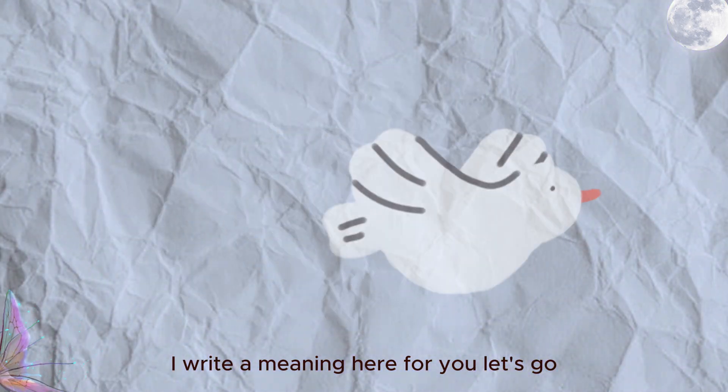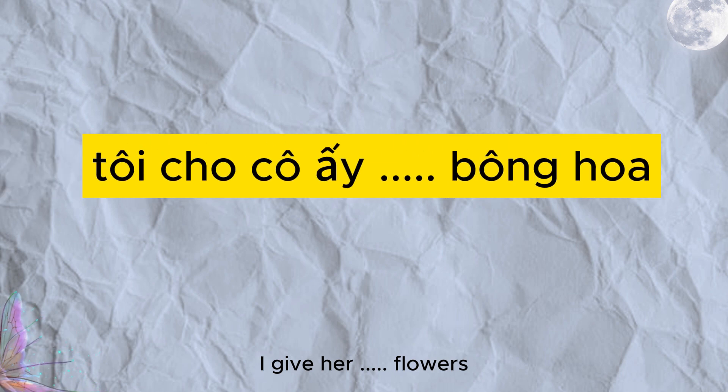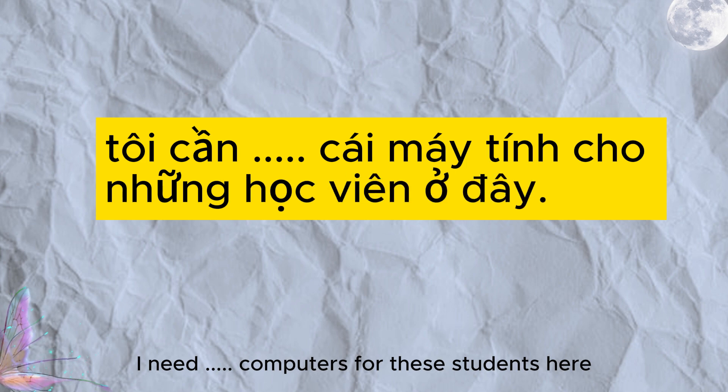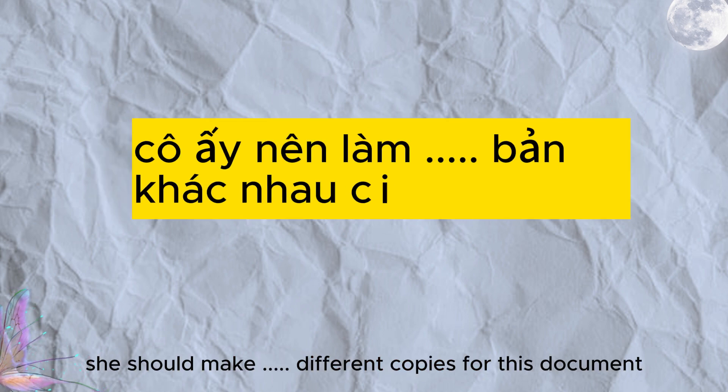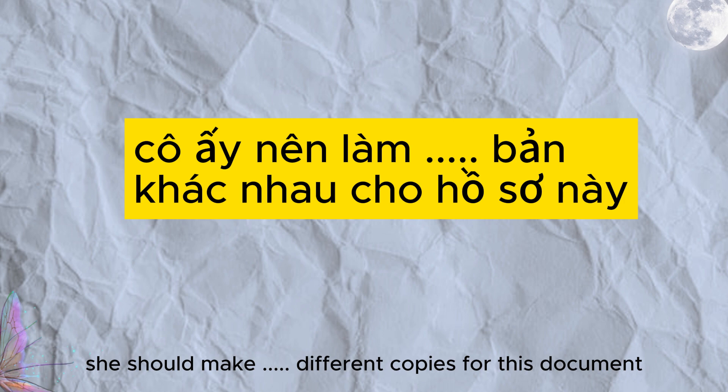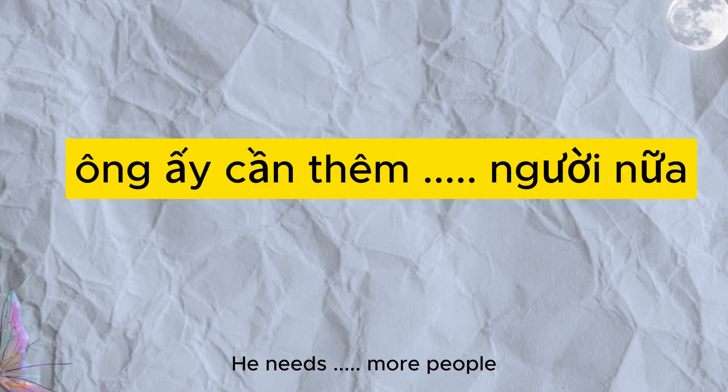Let's go. Tôi cho cô ấy 20 bông hoa. Yeah, it's 20. Tôi cần 15 cái máy tính cho những học viên ở đây. That's right, it's 15. Cô ấy nên làm 2 bản khác nhau cho hồ sơ này. That's right, it's number 2. Ông ấy cần thêm 3 người nữa. And bravo.